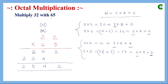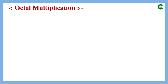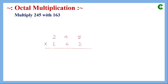Next we multiply two 3-digit octal numbers. First partial product for digit 3: 3 × 5 = 15, represented as 1 × 8 + 7, so sum is 7 and carry is 1. Then 3 × 4 = 12, plus carry 1 equals 13, represented as 1 × 8 + 5, so sum is 5 and carry is 1.